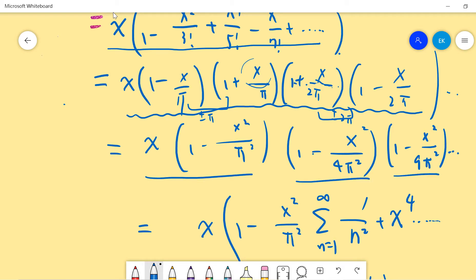Because you can multiply these two. You get 1 minus x² over π², 1 minus x² over 4π², right? So when you do the expansion, you will see the first term is 1.